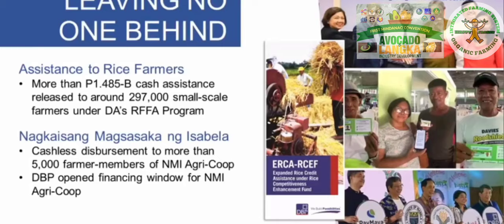Last year, DBP took a multi-channel approach in the release of more than 1.48 billion pesos of cash assistance to around 297,000 small-scale farmers under the Department of Agriculture's Rice Farmers Financial Assistance or RFFA program. The RFFA is an unconditional cash transfer program for rice farmers in 33 rice-producing provinces across the country, with farm sizes of 500 square meters up to two hectares. Each beneficiary receives a 5,000-peso cash aid for farm inputs and implements.